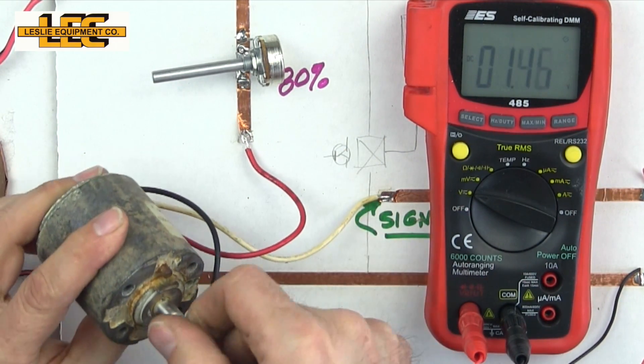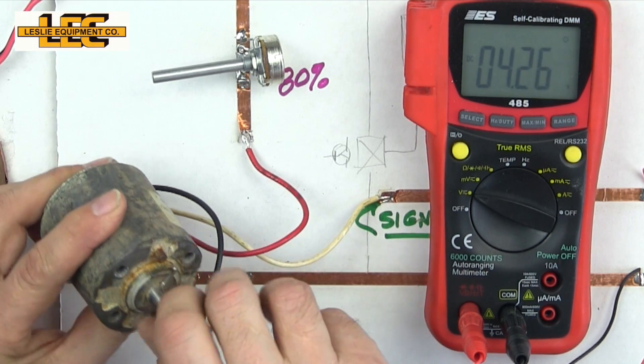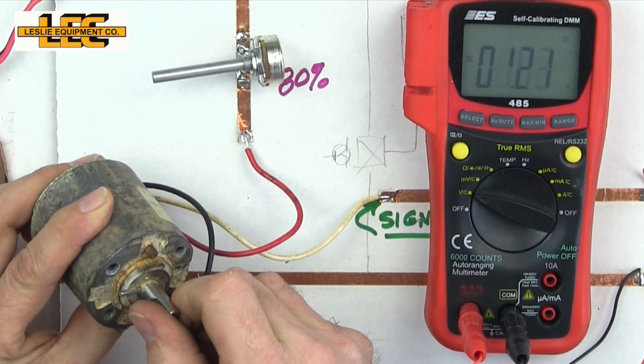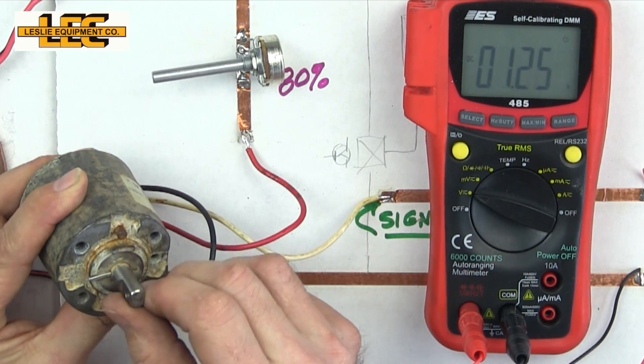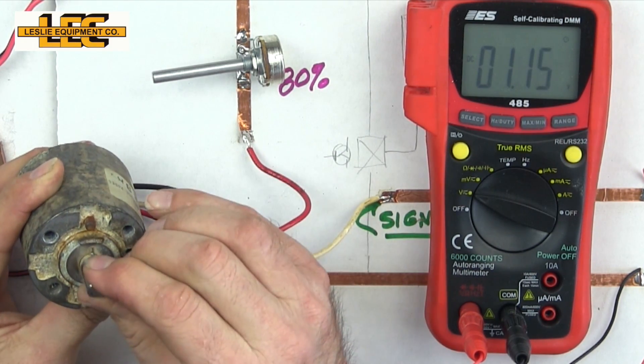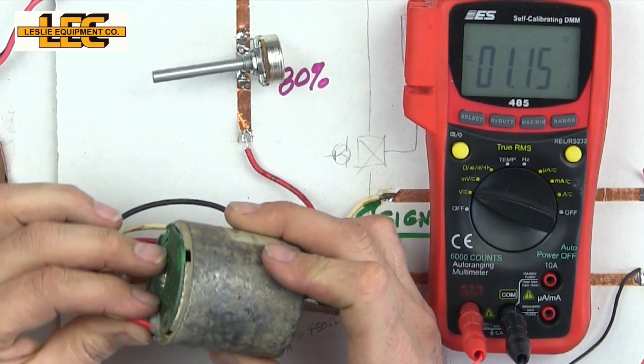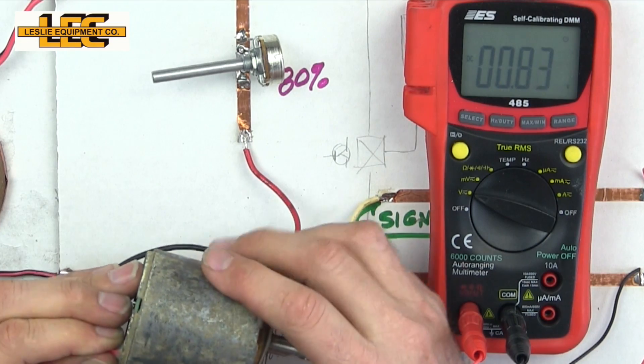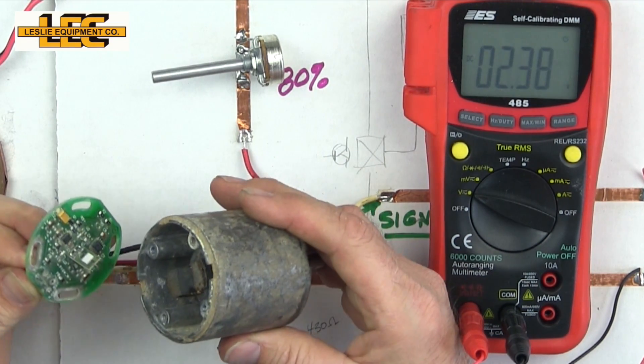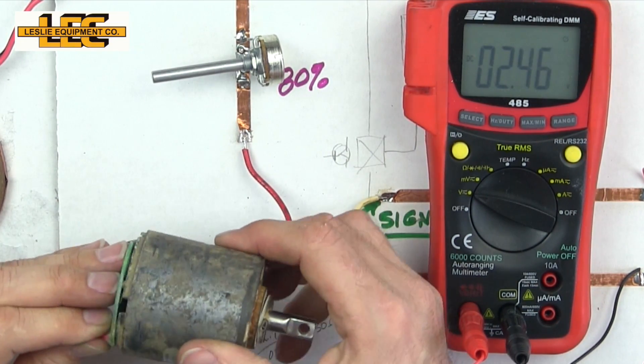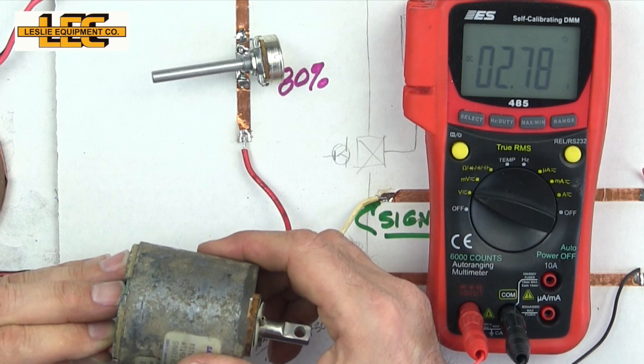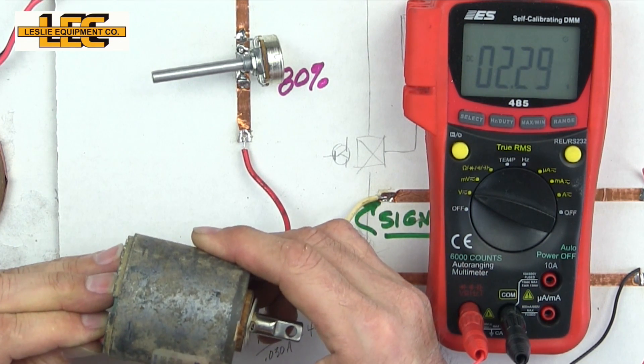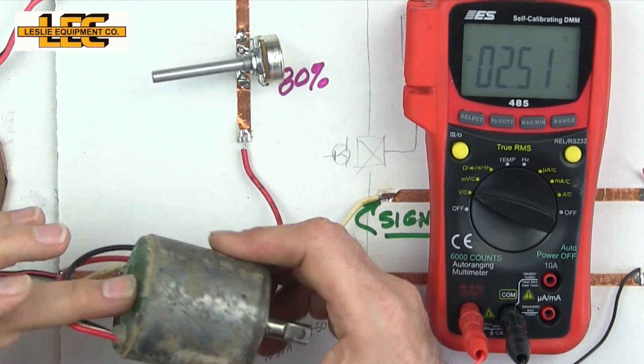There's all the way one way and there's all the way the other way. So the center, if I put this in the center right here, then I want two and a half volts. So there's two and a half.